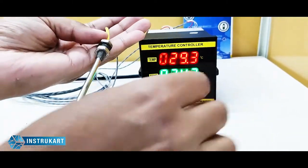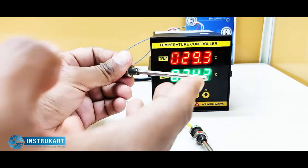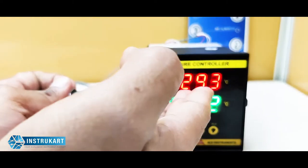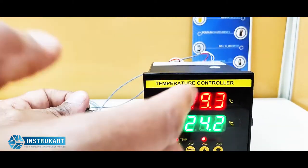Now the dry bulb is nothing but the ambient temperature, which you can see. It means that the ambient temperature is 29.3 degrees in this room.